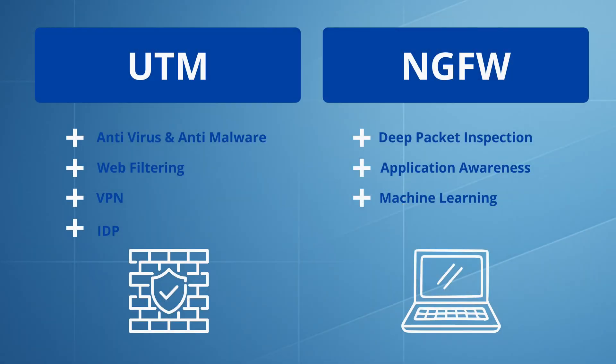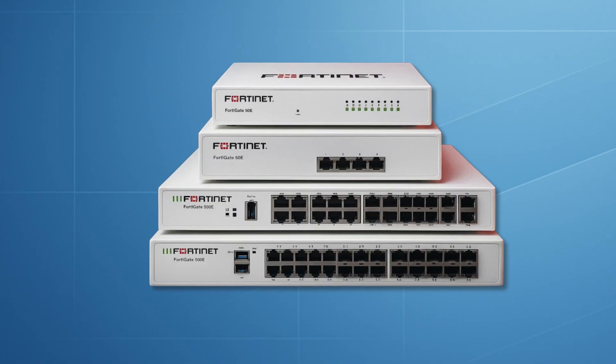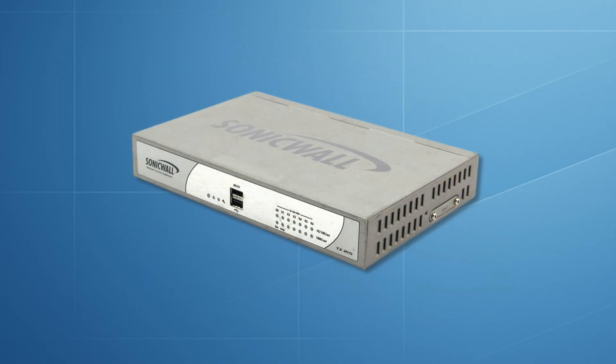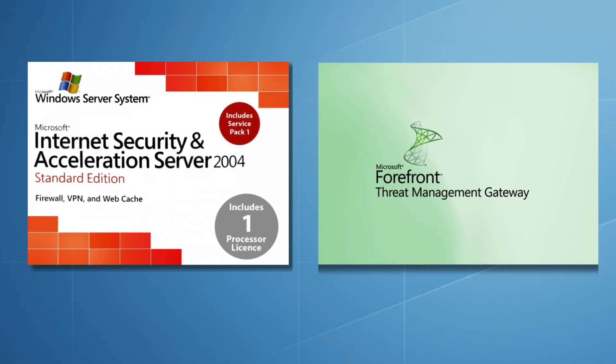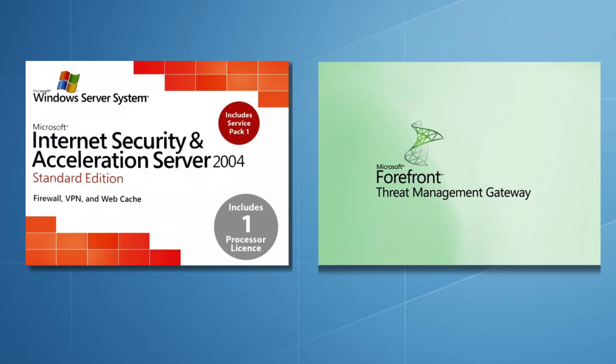The IT world had started to move on. Unified threat management devices and next-generation firewalls were becoming the predominant devices. The Cisco ASA, Fortinet FortiGate, and SonicWall TZ series led this change. In September 2012, Microsoft officially ended the development of their firewall product lines, and ISA Server and TMG quietly faded into the annals of history. Looking back, ISA Server was way ahead of its time. It blurred the lines between application and network security, and you might say it introduced the concept of a layer 7 firewall and zero trust to many small business and system administrators.